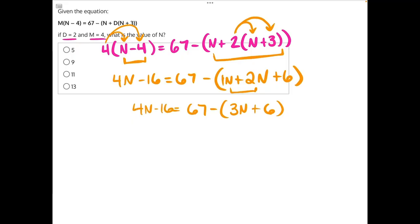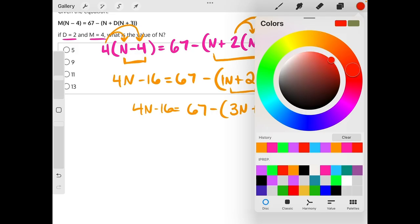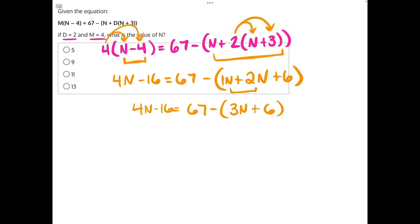Now, there's one last distributive property step that we can do here, because this negative sign must be distributed to both numbers inside the parentheses. Again, if it exists in math, there's always one of them, so this is really a negative 1 being distributed. Negative 1 times 3n will give us negative 3n, and negative 1 times 6 will give us negative 6. Now those parentheses are completely gone, we can bring everything else down, and start to do some opposite operations.